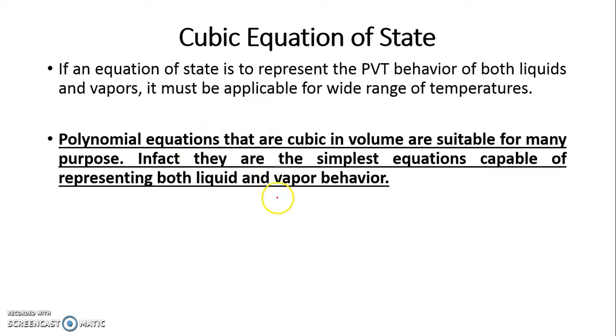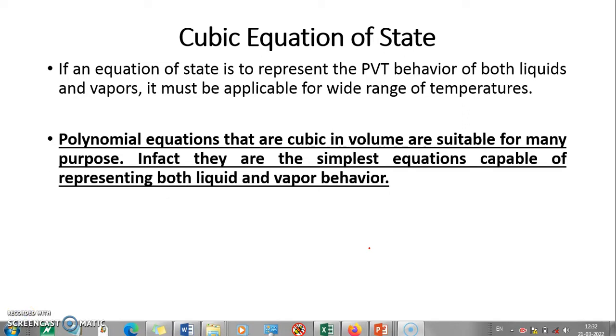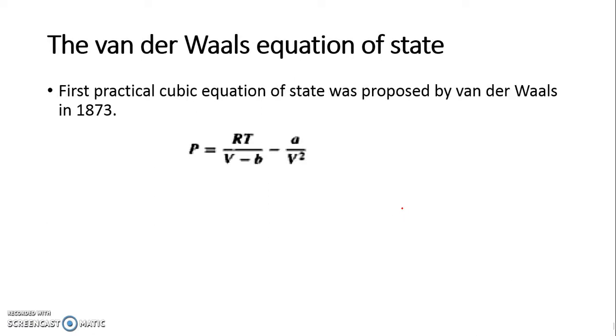It was the cubic equation of state which first was able to predict the entire PV diagram. These are polynomial equations that are cubic in volume and are suitable for many purposes. They are the simplest of the equations and they are capable of representing both liquid and vapor behavior. They are called cubic because they are cubic in nature. This is why they are called cubic equation of state.